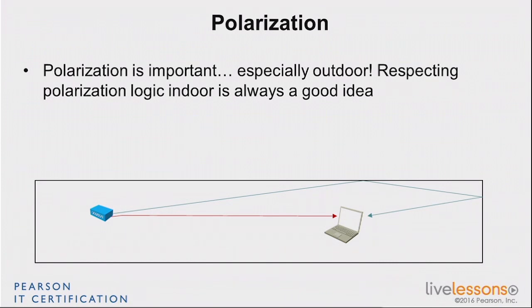However, it doesn't mean that you shouldn't care about it. You should do your job. And if you have a polarization system — typically Wi-Fi uses vertical polarization — you should make sure that your antennas are vertical, if they are supposed to be sticking out of your access points, up and down. They have to be vertical so that you have the right polarization right from the beginning. If it's not that way, it's typically not critical, but it's better if it is.